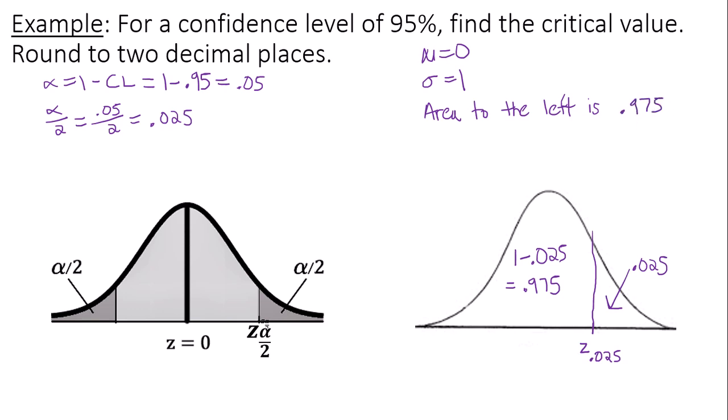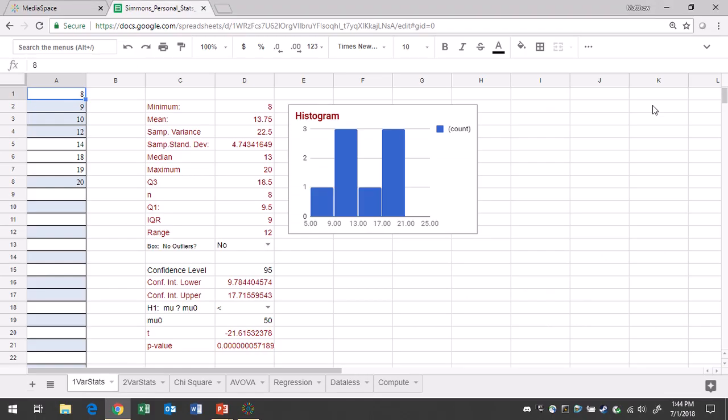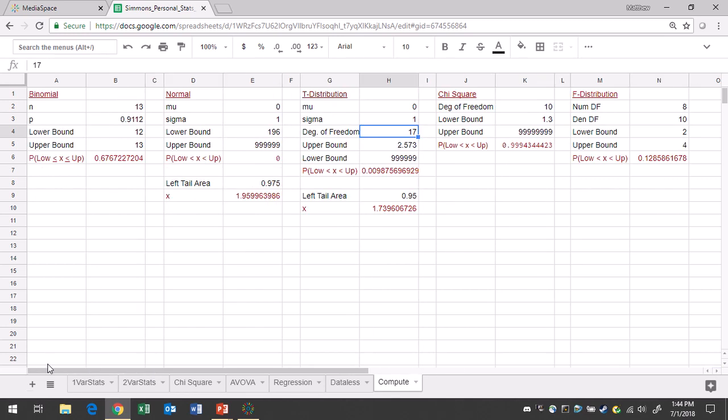Let's go to Google Sheets. You're going to go to the Compute tab, then to the normal region. The mean is 0, the standard deviation is 1, and the only other information you need to put is the left tail area, 0.975. This gives me an answer of about 1.96.